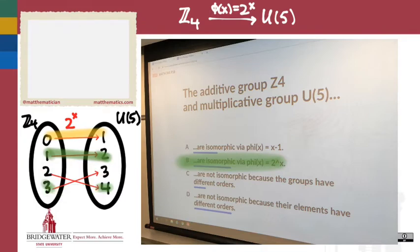So what I'm trying to do is highlight the elements that have the same orders as one another. Two here has order 2, and so does 4 over here. One and 3 in this group have order 4, and 2 and 3 in this group have order 4. So all those orders match up. But that's not a proof—just showing that the orders agree is not enough. What else do we have to do?